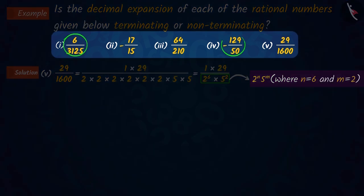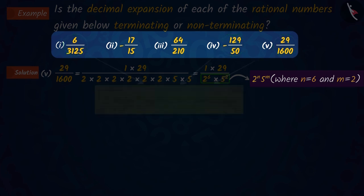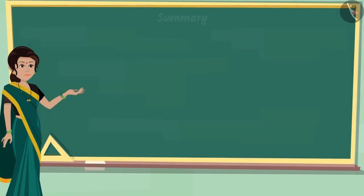So, the decimal expansions of the 1st, 4th and 5th rational numbers will be terminating, and the decimal expansions of the 2nd and 3rd rational numbers will be infinitely recurring, i.e., non-terminating.